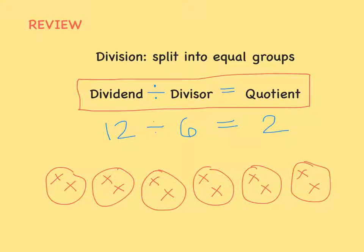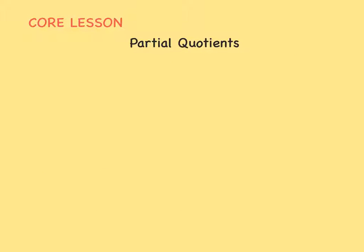We have learned how to divide using repeated subtraction or by drawing images. When we divide large numbers, we don't want to have to do repeated subtraction or draw pictures, so there are a couple different methods we can use. One of these methods is called Partial Quotients, which means we're finding pieces of the answer. After we add up all the pieces, we'll know our whole answer.